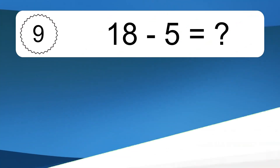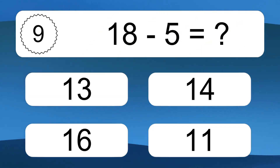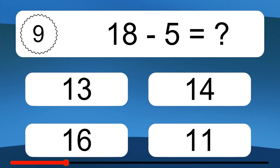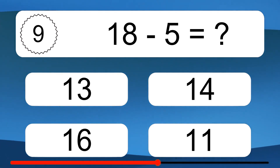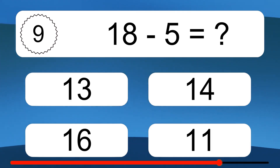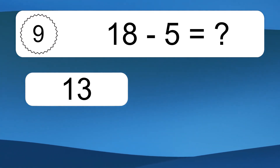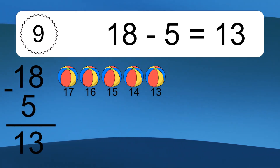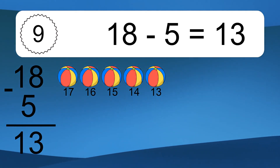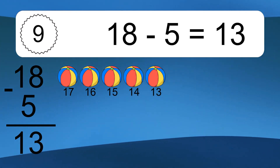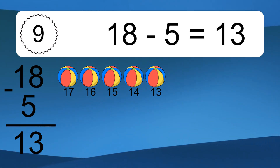18 minus 5 equals what? 18 minus 5 equals 13. Let's count it: 17, 16, 15, 14, 13.